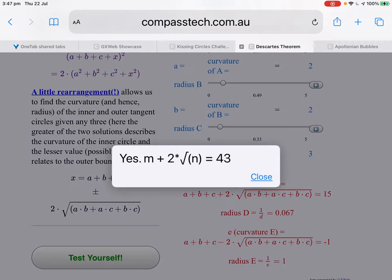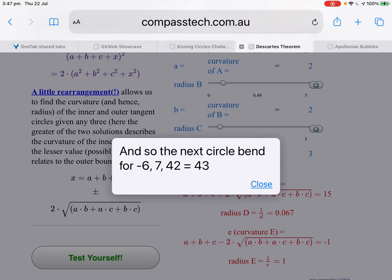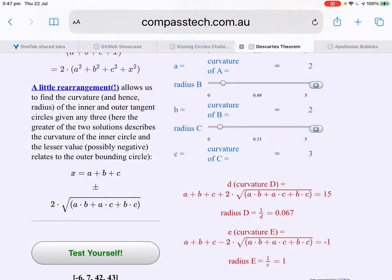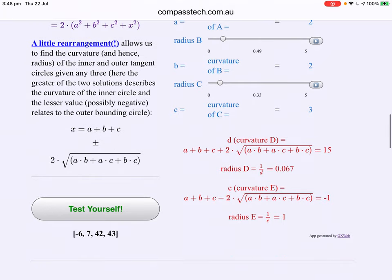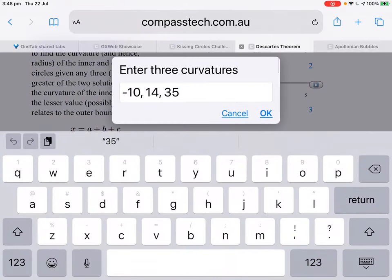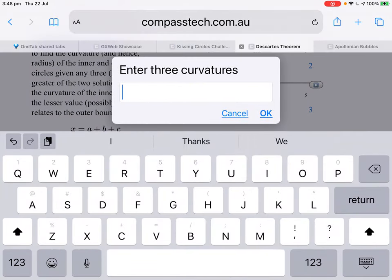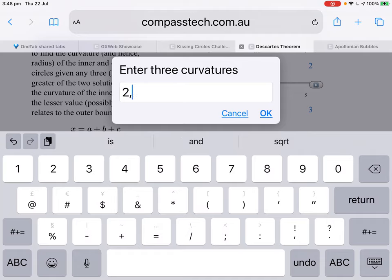Our next number, not surprisingly, minus 6, 7, 42 and 43. So this is a great way for students to become more confident and to explore Descartes' wonderful theorem. Let's put in one of our own. Suppose we went 2, 3, 6.